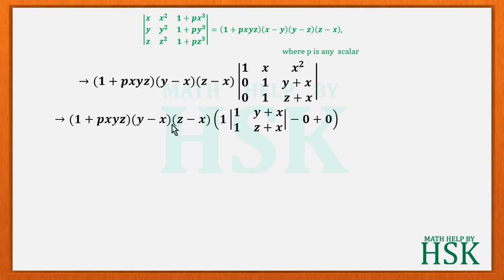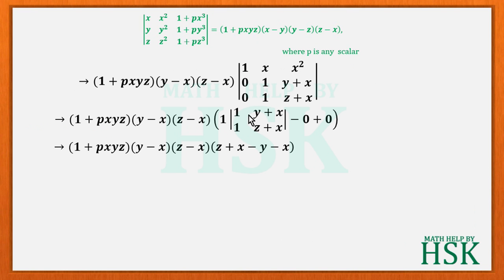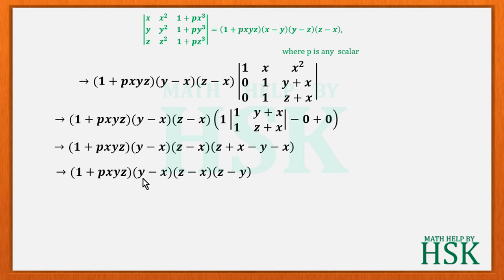Expanding this determinant, we get 1 times the 2×2 determinant with rows (1, y+x) and (1, z+x), which equals (z+x) − (y+x). The x terms cancel, leaving z − y.